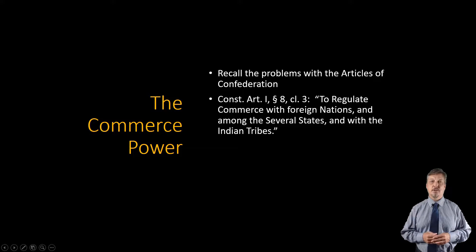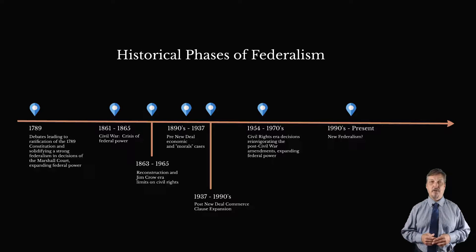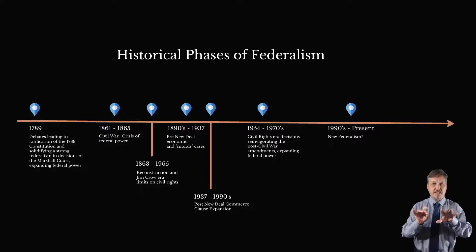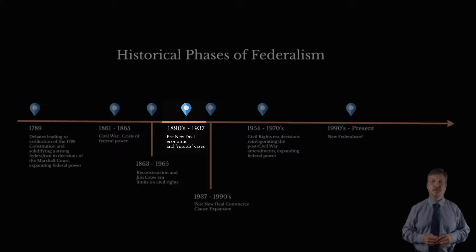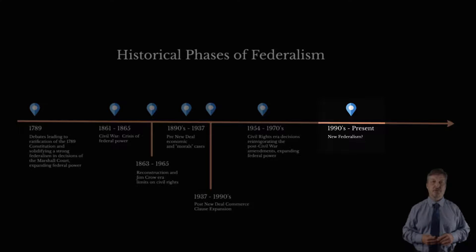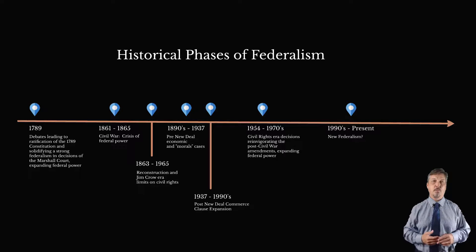A few moments ago I described seven broad historical phases of federalism jurisprudence, some relating to federal judicial power, some to civil rights, and some to the commerce power. If we tease out the commerce power federalism issues, we can discern at least three broad phases of Commerce Clause jurisprudence. One, a strong but still limited power prior to the New Deal. Two, a significant expansion during and after the New Deal. And three, a possible contraction as a result of the New Federalism. This third phase is really our current historical moment, and it remains to be seen whether and how the court's changing makeup will influence any kind of new federalism.